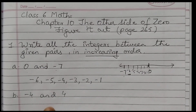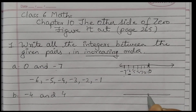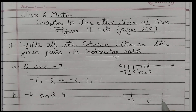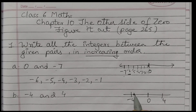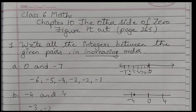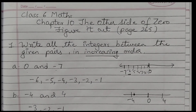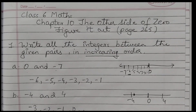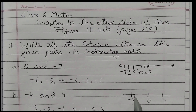Next one: minus 4 and 4. On the number line, I place 0 in the middle, minus 4 on the left and 4 on the right. The smallest number starts from the left side. So the integers between them in increasing order are: minus 3, minus 2, minus 1, 0, 1, 2, 3.